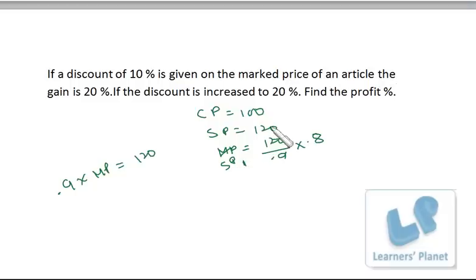That means the selling price will be 80% of marked price. This becomes the new selling price. If I am able to calculate the selling price, direct difference will give me the profit figure. The selling price is 320 by 3.